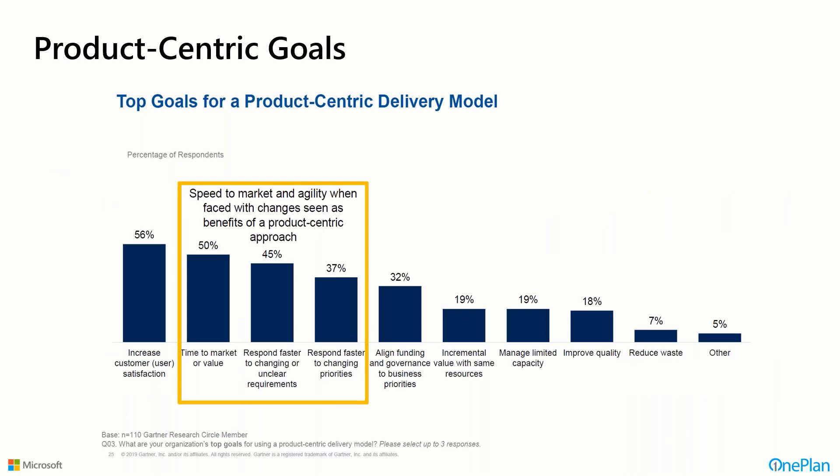Product-centric goals: why do organizations go product-centric? The Gartner Group found that the top three reasons are time to market or value, responding faster to changing or unclear requirements, and responding faster to changing priorities. It's all about speed and responsiveness — making sure we're delivering the right things to customers. This is consistent with the concepts we've been discussing.